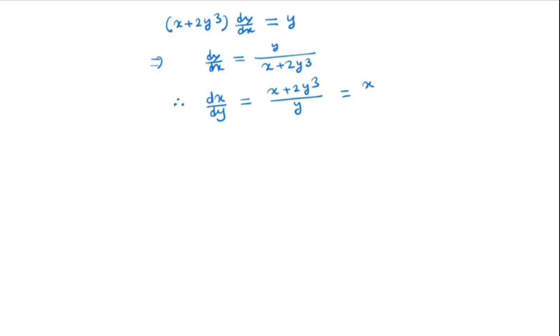And if we simplify this we get x/y + 2y³/y which is x/y + 2y². So we get dx/dy - x/y = 2y².